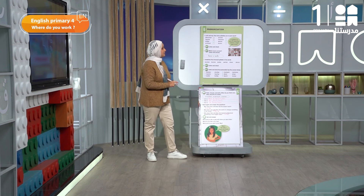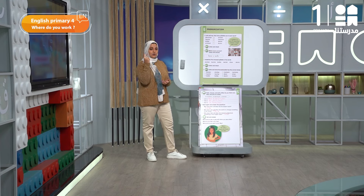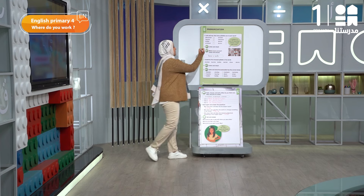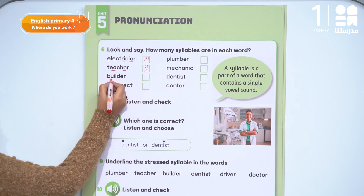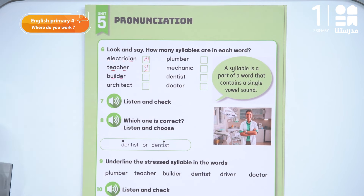The word 'builder' — same approach. The U and the I I will consider as one, and the E is another one. So two syllables.